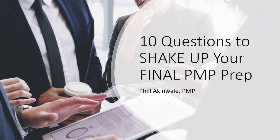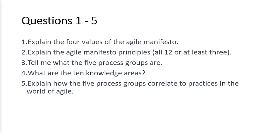The very first set of questions, one to five, were as follows: explain the four values of the Agile Manifesto; explain the Agile Manifesto principles, all 12 or at least three; tell me what the five process groups are; what are the 10 knowledge areas; and question five was explain how the five process groups correlate to practices in the world of Agile. I'm going to answer these questions one by one.